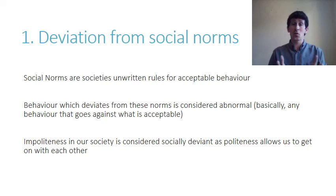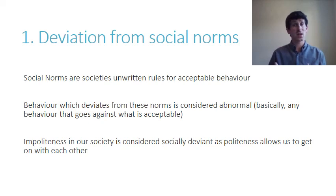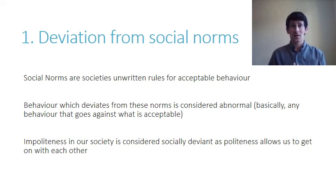As an example, politeness and manners is one of the main social norms in our society. We expect people to be nice and polite — it's a way that our society has managed to get on with each other. These are the social norms, and anything that deviates from these is considered abnormal.